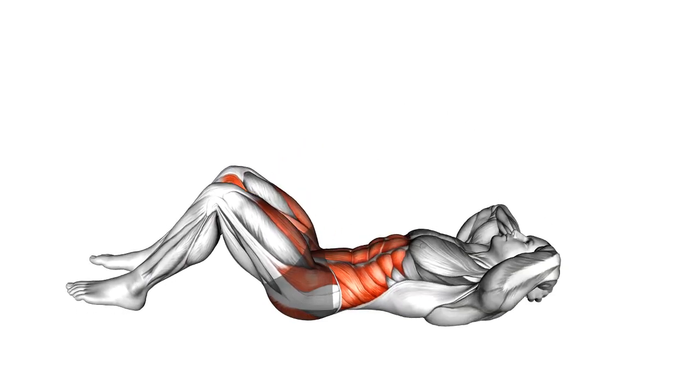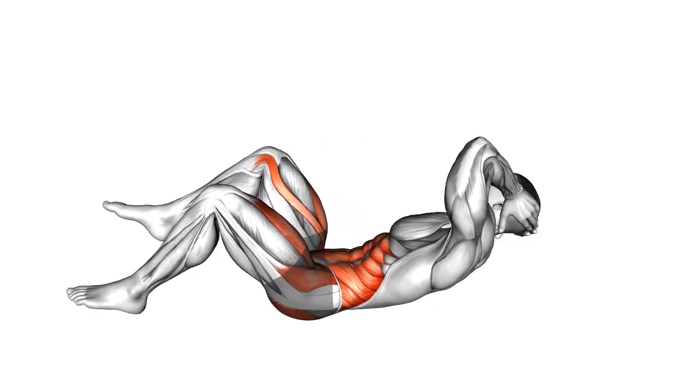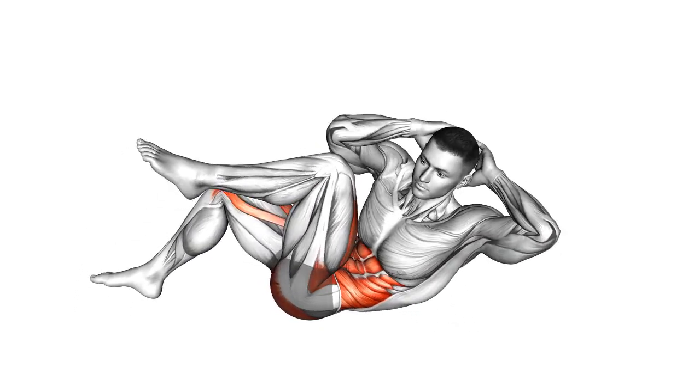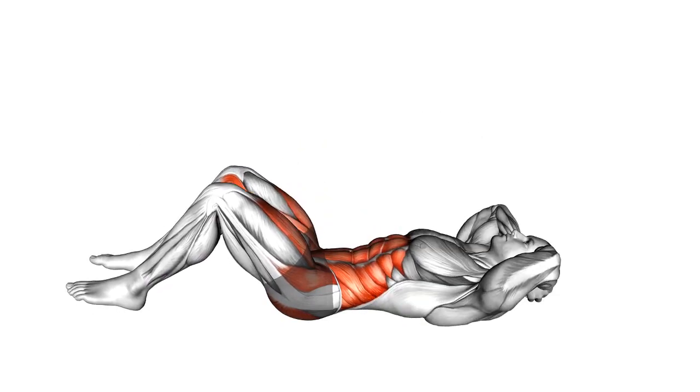Air Twisting Crunch: This exercise involves lying flat on your back and then lifting your upper body while twisting your torso to one side and bringing your elbow towards the opposite knee.